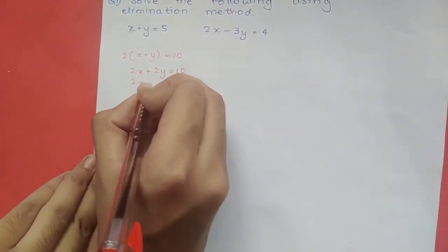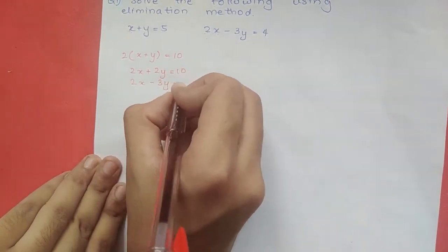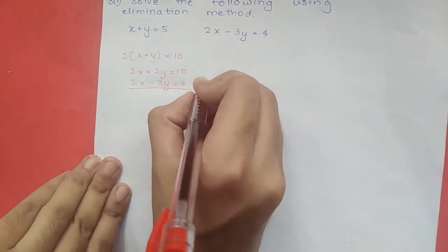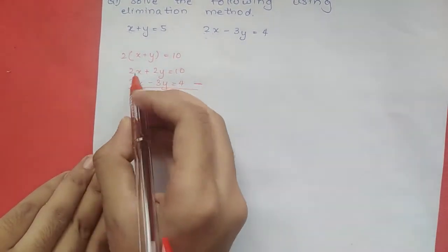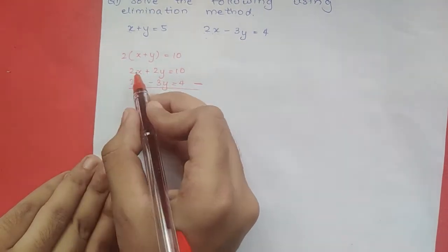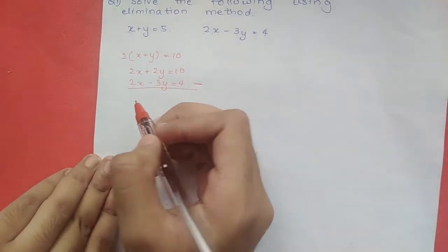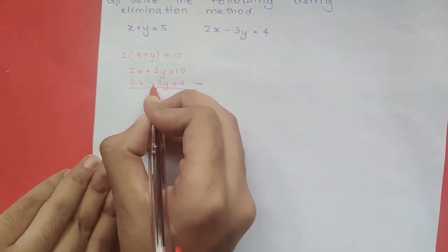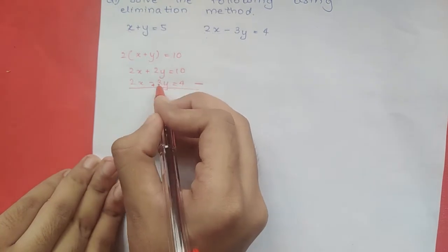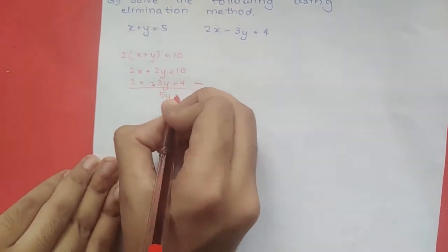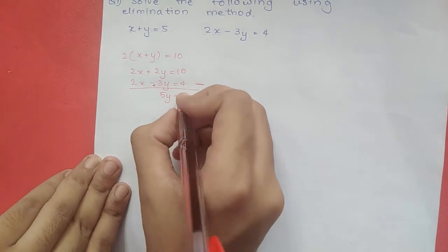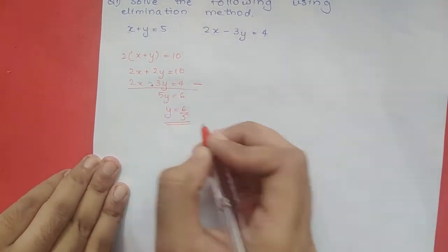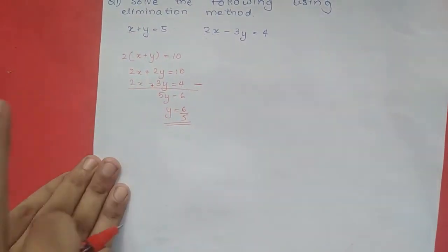We have 2x minus 3y equal to 4. We can eliminate by doing 2 minus 2x minus 3y. So 2x minus 2x gives 0x, and 2y minus 3y gives negative 5y. Then 10 minus 4 equals 6, so 5y equals 6, giving y equals 6 by 5.